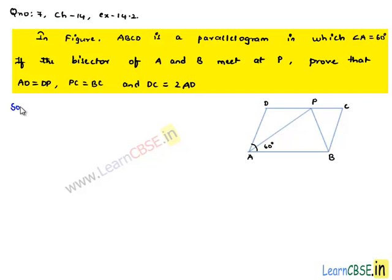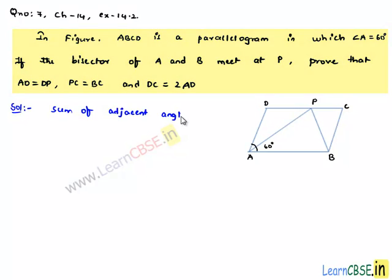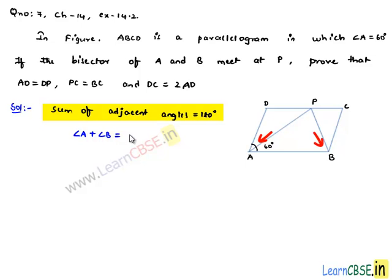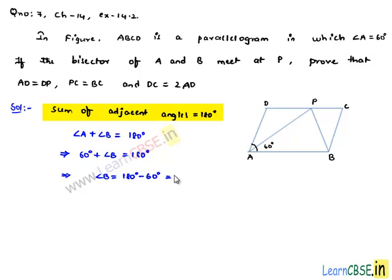Now, moving on to the solution. It is given that ABCD is a parallelogram. We know that in a parallelogram, the sum of adjacent angles is equal to 180 degrees. That is, angle A plus angle B is equal to 180 degrees. It is given that angle A is equal to 60 degrees. So angle B is equal to 180 minus 60 degrees, which is equal to 120 degrees.